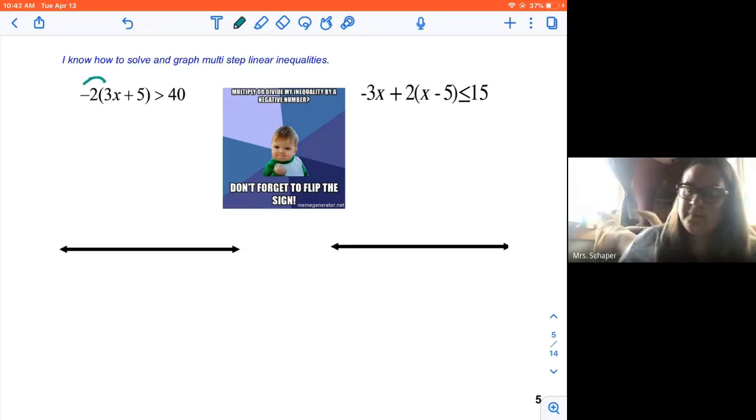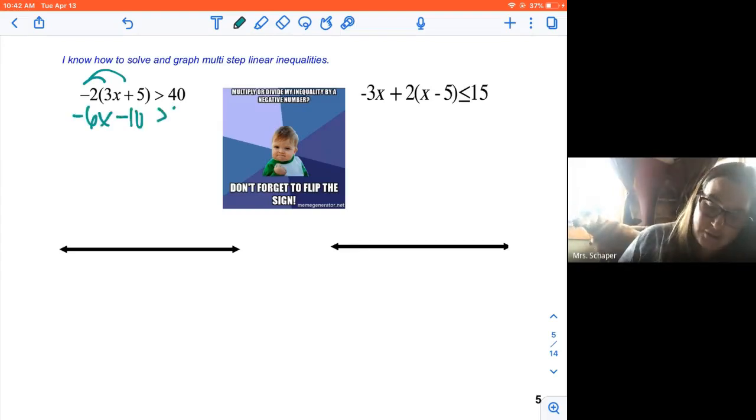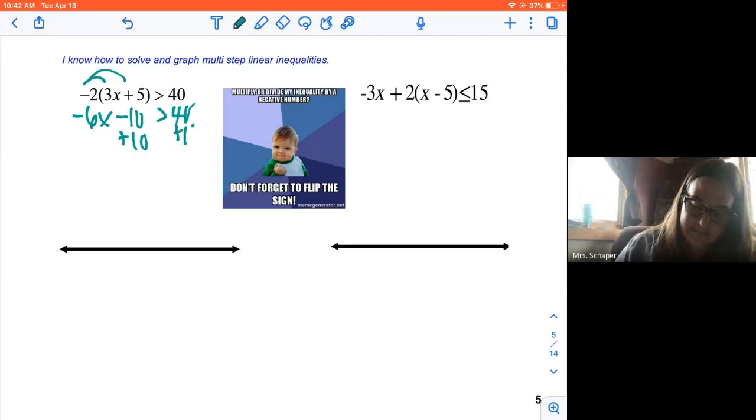What we're going to do is start by distributing. So we're going to end up with -6x - 10 > 40. I'm going to start by adding 10 to both sides. So I have -6x > 50.